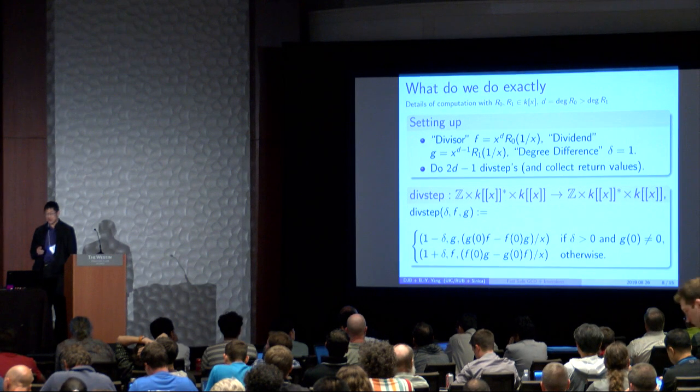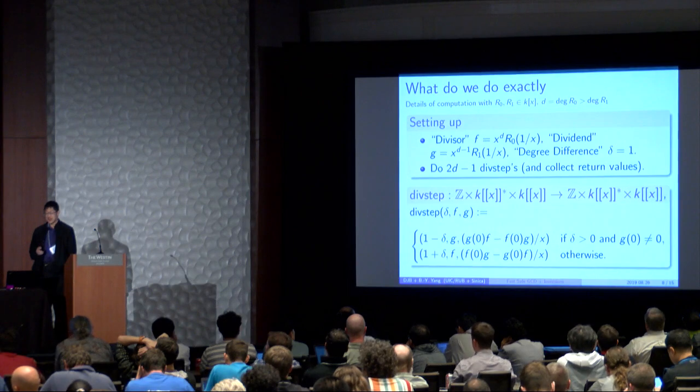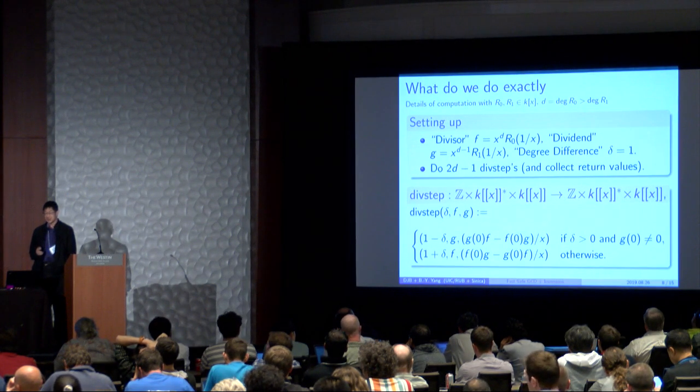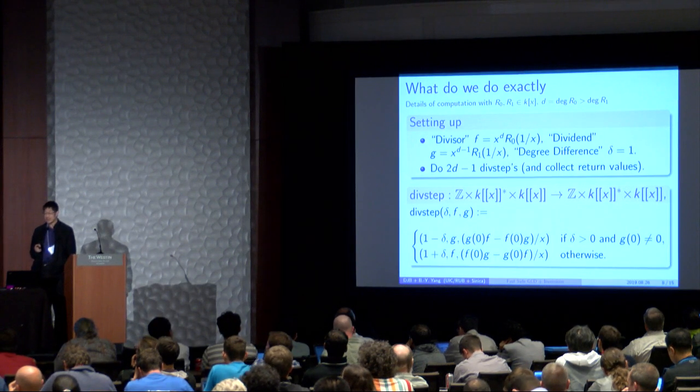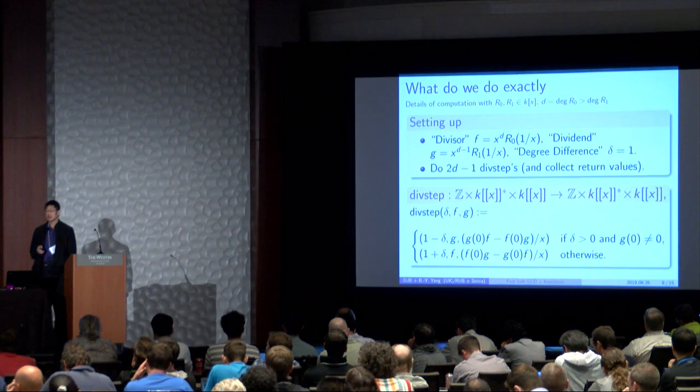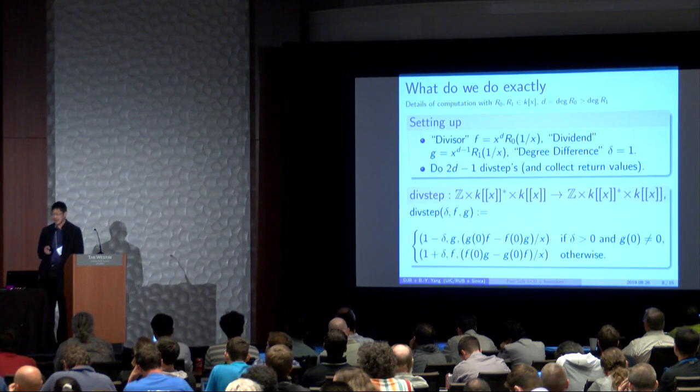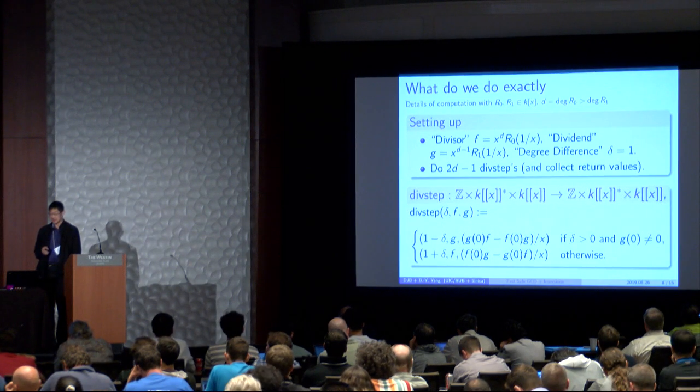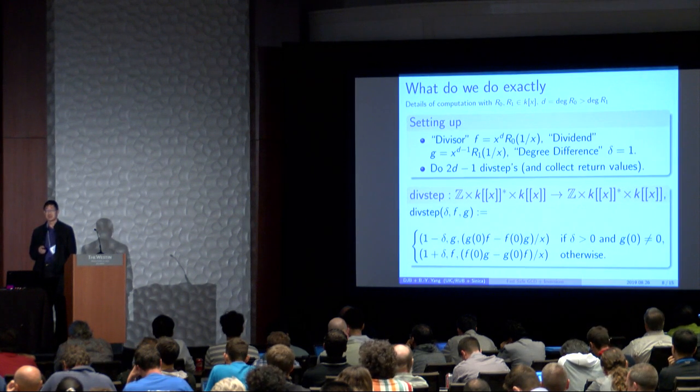So what do we do exactly? The details of the computation, when we are doing a GCD with R0 and R1, or doing the inverse of R1 modulo R0, where degree of R0 is D and degree of R1 is less than D, we will set up by making F the reverse of R0. And the dividend, G, is x to the D minus 1 R1 of 1 over x. The degree difference we set to be 1. What we do now is we do 2D minus 1 divsteps, and we can collect the return values.